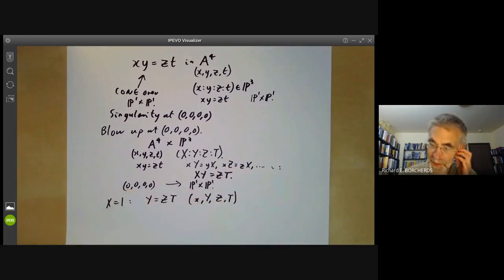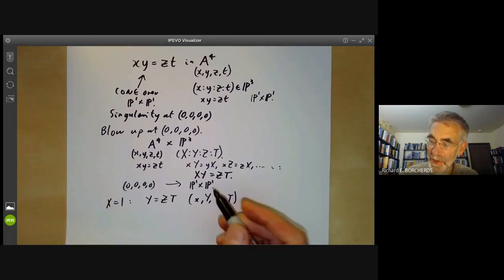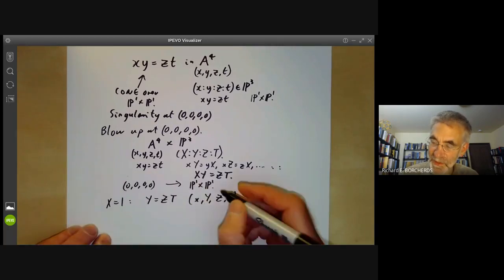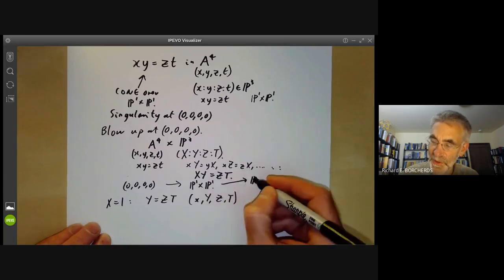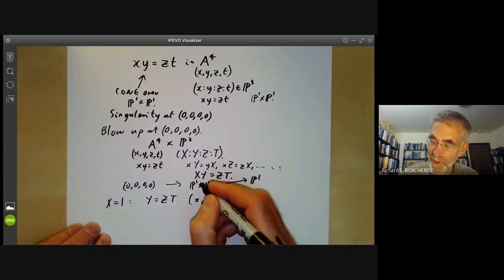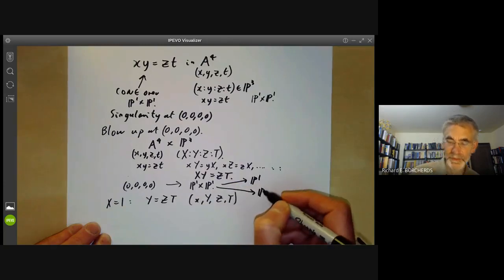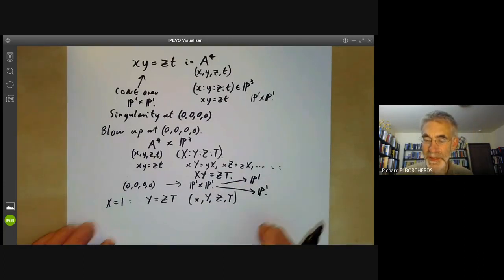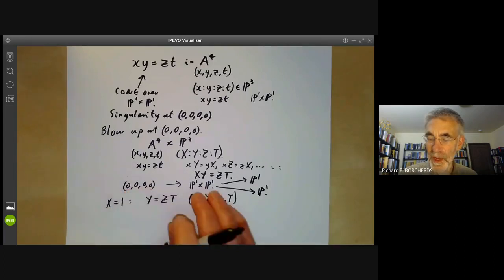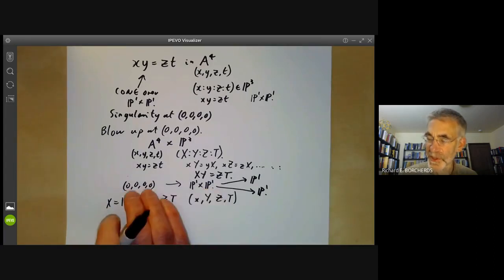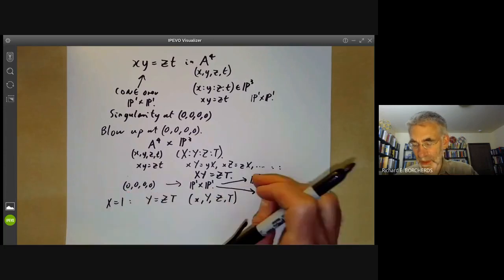Now the point is this exceptional variety can be blown down to P1 in two different ways. There's one map to P1 on the first coordinate and one map to P1 on the second coordinate. It turns out that instead of blowing up the origin to P1 times P1, we can sort of half-heartedly blow it up to just a P1.